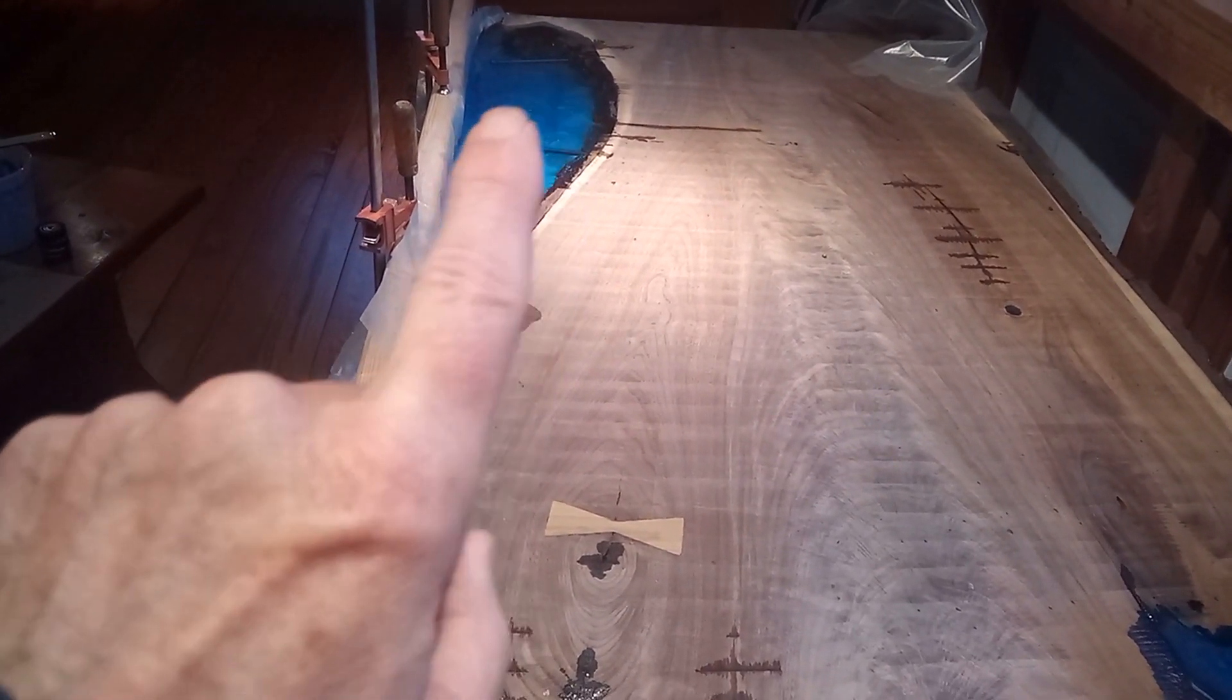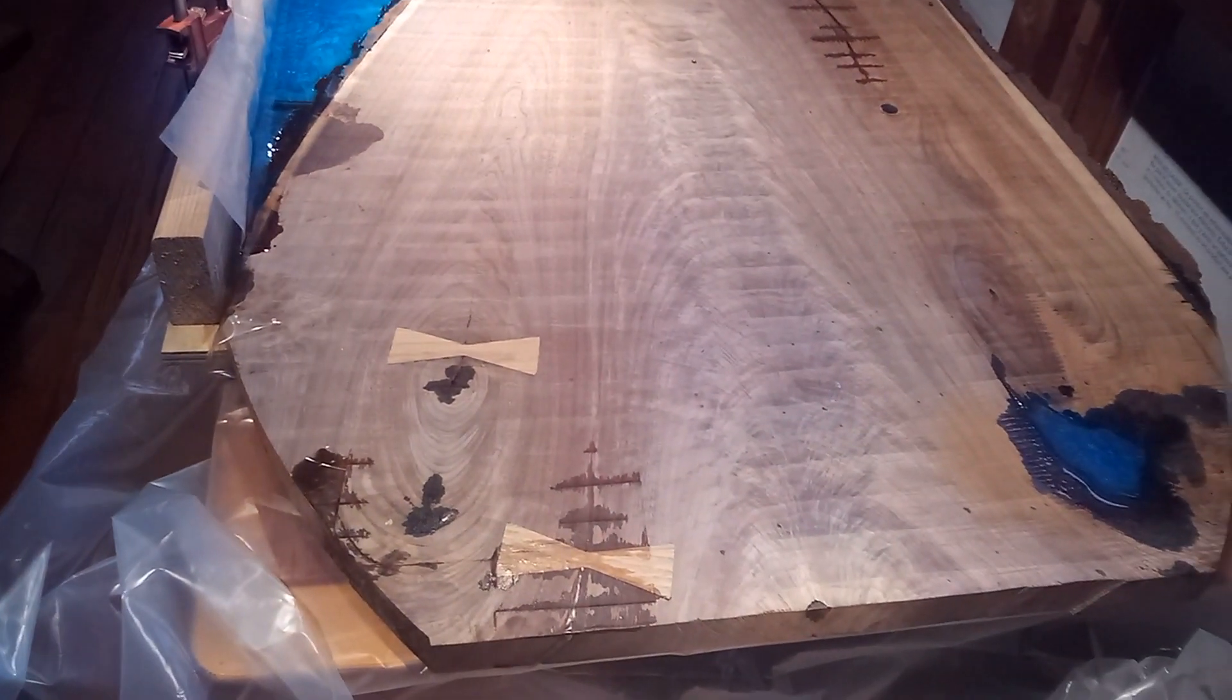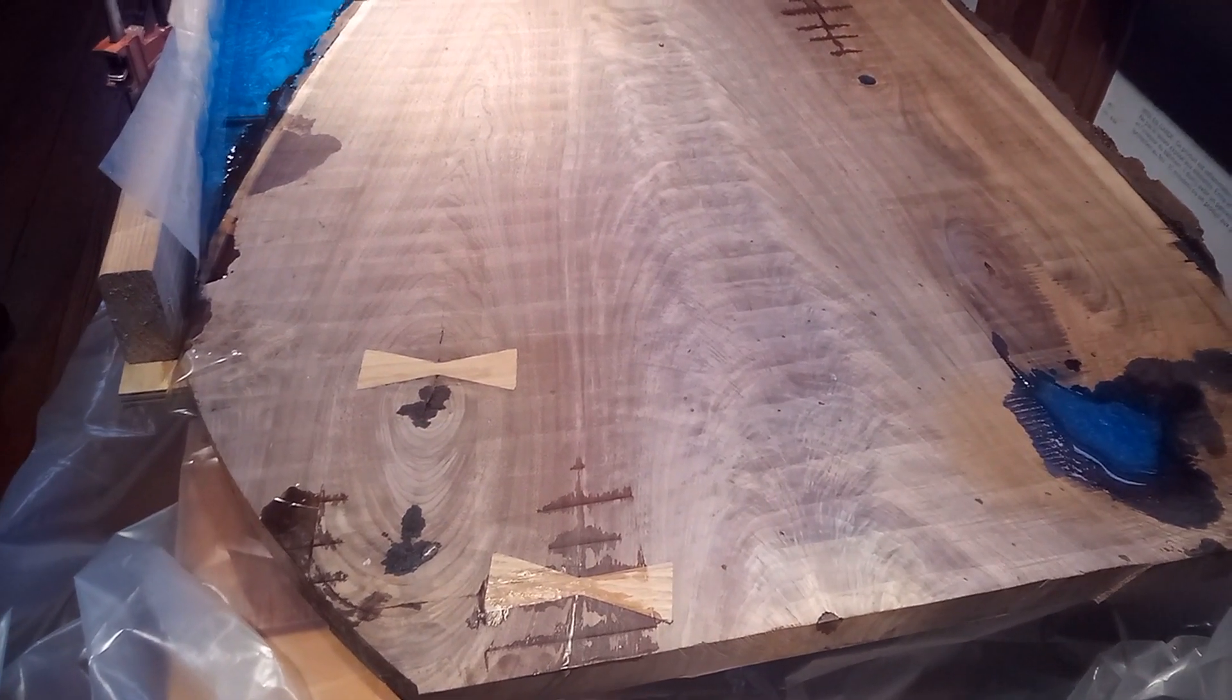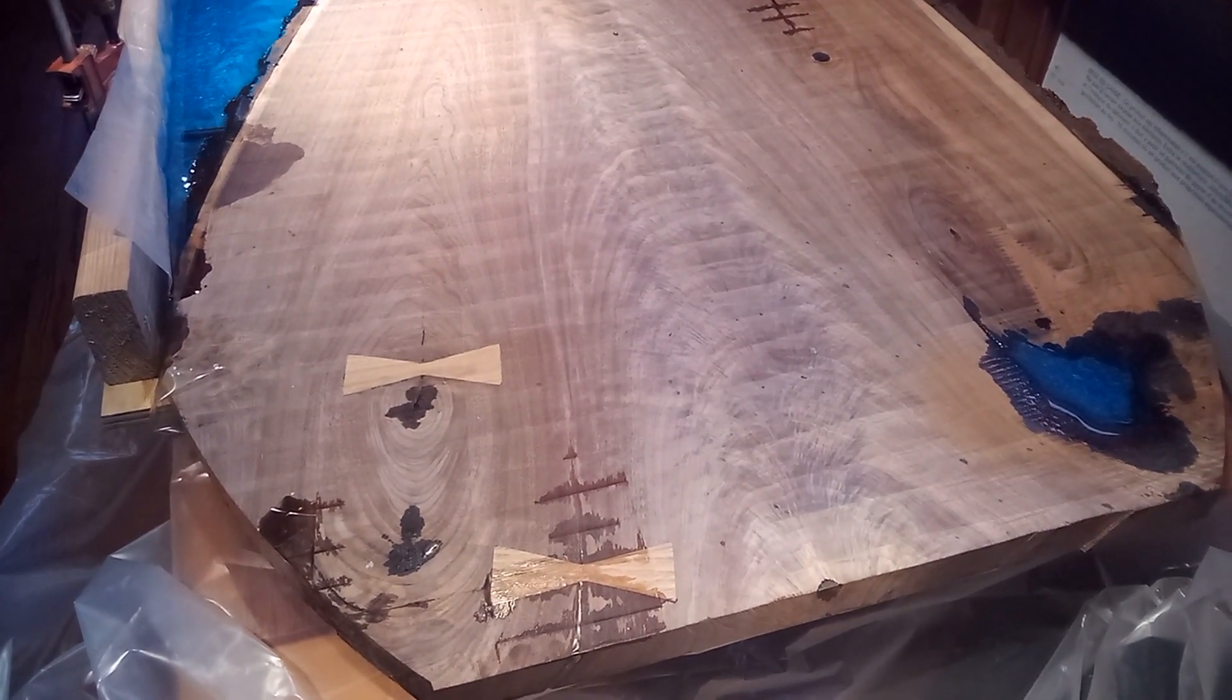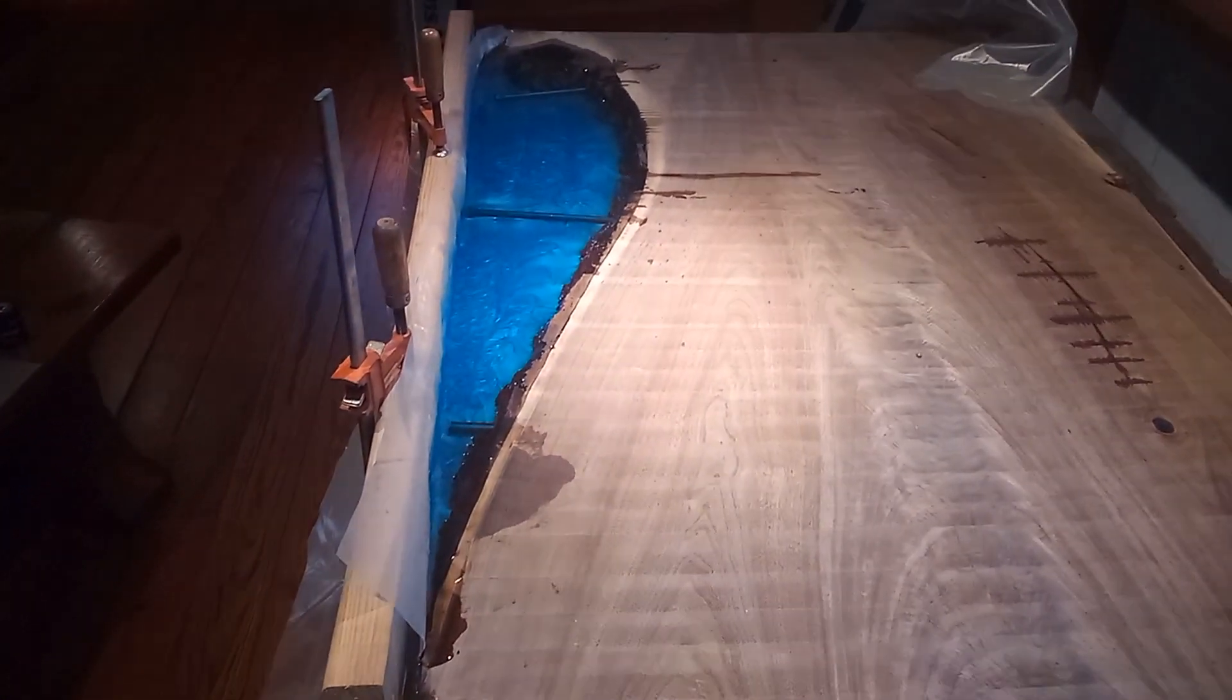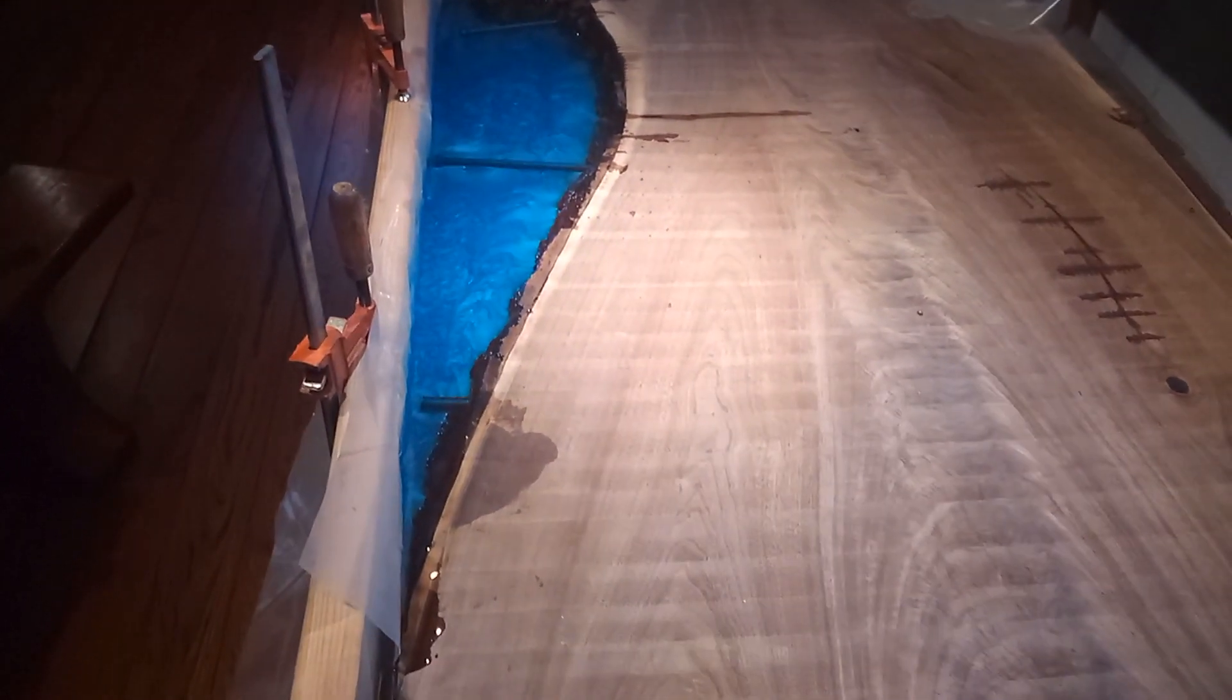The project here is a crotch cut black walnut slab table with an epoxy resin fill. That's what this blue area is here. And just to give you a little overview of the whole table.